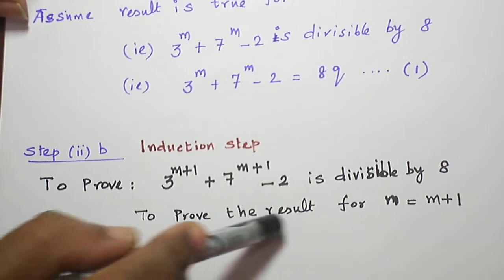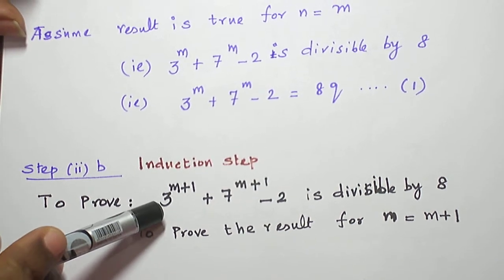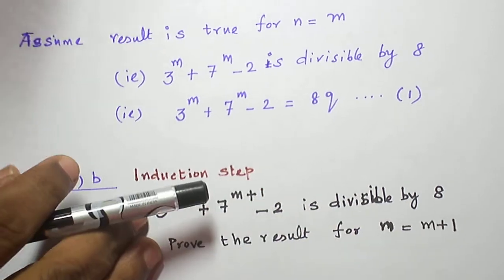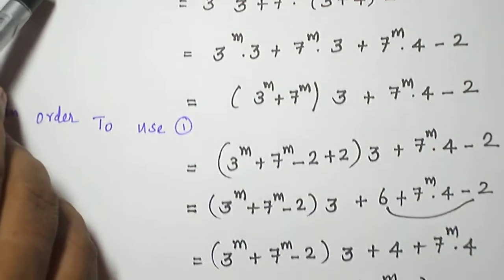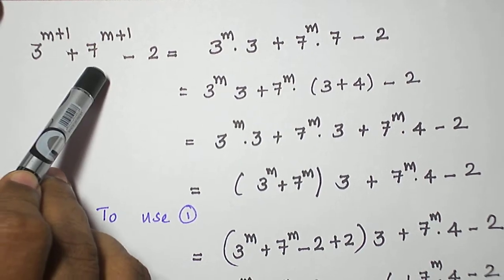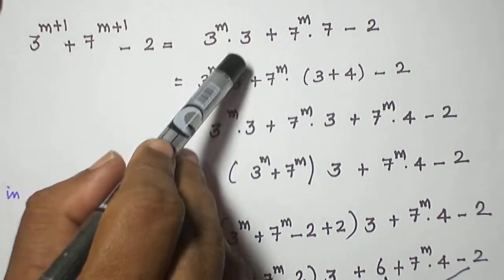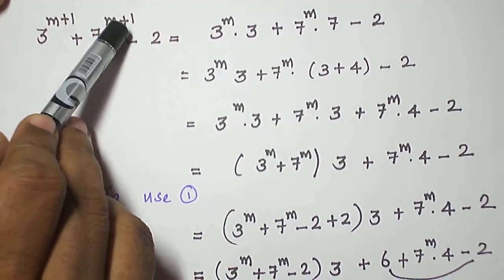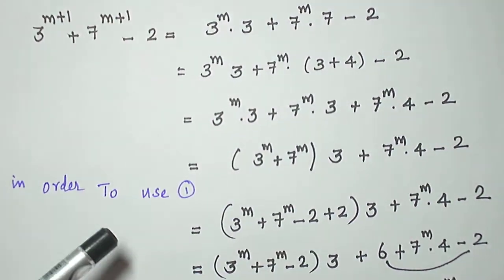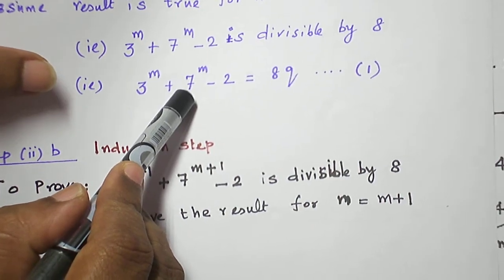Now let us prove the result is true for n is equal to m plus 1. That is, 3 power m plus 1 plus 7 power m plus 1 minus 2 is divisible by 8. We start with this expression: 3 power m plus 1 plus 7 power m plus 1 minus 2. We split 3 power m plus 1 as 3 power m into 3, and 7 power m plus 1 as 7 power m into 7. We want to make use of equation 1, so we need to get 3 power m plus 7 power m.